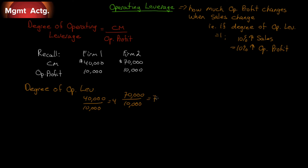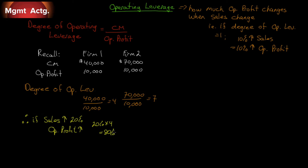What does this mean? It's not enough to figure out the number — what does it mean? If sales increase by 20% for both firms, the operating profit for Firm 1 will increase by 20% times 4, so 80%. But Firm 2's profit will increase by 140%, because it has a higher contribution margin and a higher contribution margin ratio.